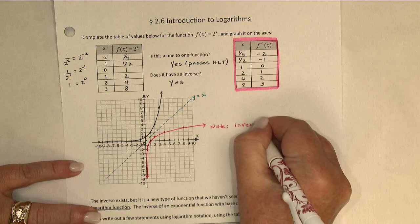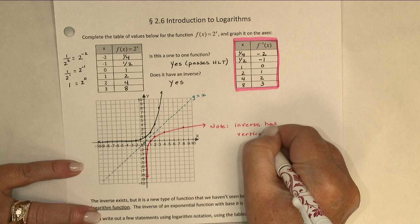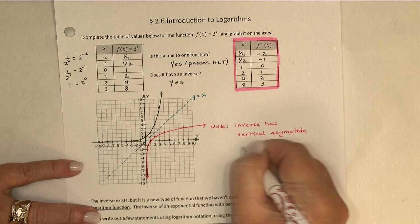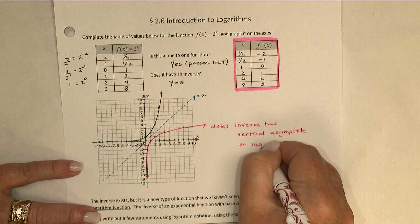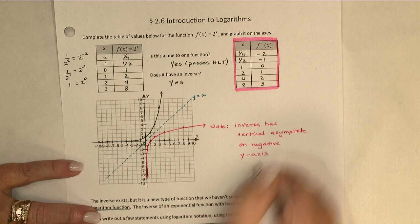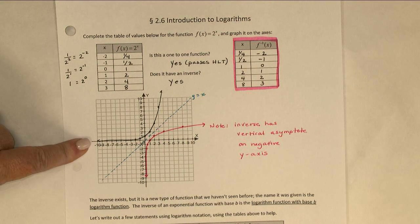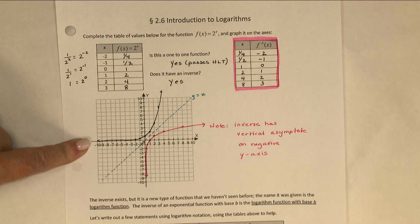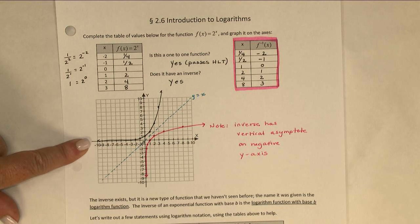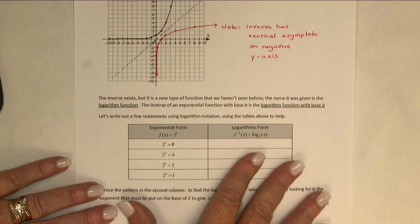And instead of a horizontal asymptote along the x-axis, what we end up with is a vertical asymptote where our values get very close but don't cross or touch the y-axis. The inverse has a vertical asymptote on the negative y-axis, just like the original function had a horizontal asymptote on the negative x-axis. Notice how that x and y trade roles again.